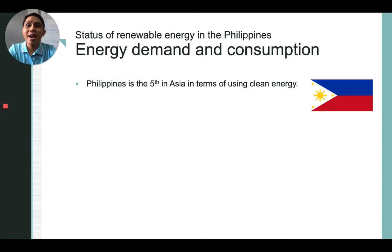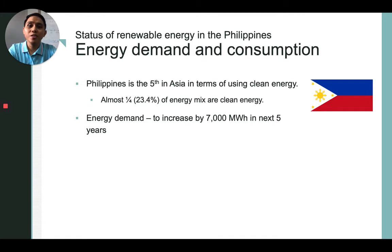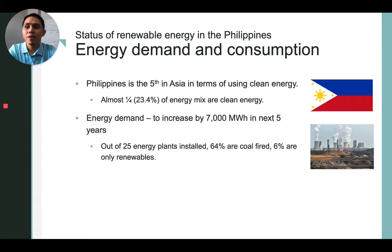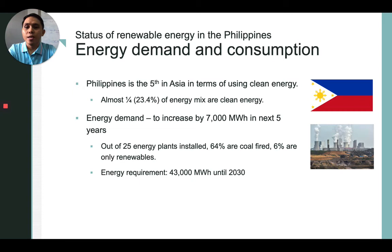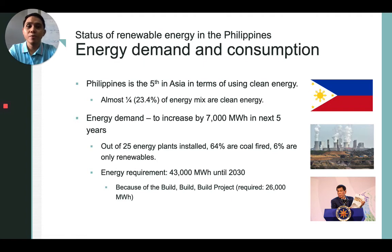This percentage is actually higher than the renewable energy capacity of the United States, which is just around 21.56% as of the year 2019. In terms of energy demand, according to the Department of Energy of the Philippines, energy demand is seen to increase by 7,000 MWh in the next five years. Out of the 25 energy plants installed, 64% are coal-fired and only 6% are renewables. In terms of energy requirement, it is seen that until 2030 the country would need around 43,000 MWh — in part because of the Build, Build, Build project of President Rodrigo Roa Duterte, which would require around 26,000 MWh of energy. Looking at installed capacity, the country currently has only 22,728 MWh.